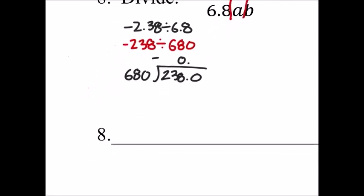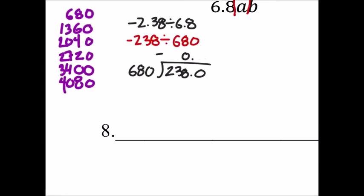Let's look at some multiples of 680 then. Alright, there's some multiples. Let's see how far that gets us though. So 2380, looks like it will go into it three times, which would give us 2040. And when we subtract, we get 340.